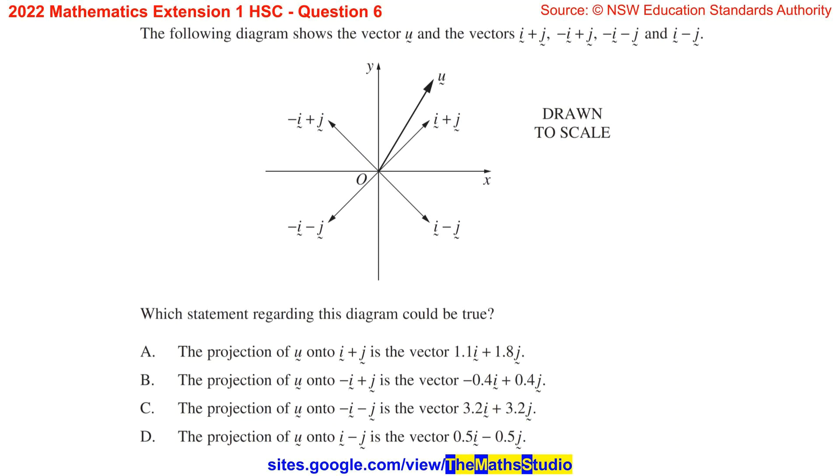Question 6. The following diagram shows the vector u and the vectors i plus j, negative i plus j, negative i minus j and i minus j. Which statement regarding this diagram could be true?